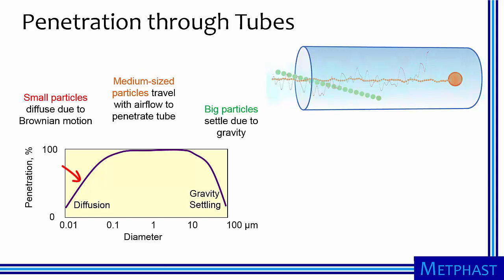Very small particles tend to diffuse to the walls resulting in low penetration. Medium-sized particles in contrast, like the orange particle, go with the flow and have a high penetration efficiency. Big particles settle due to gravity and wind up on the bottom walls of the tube and have low penetration again.